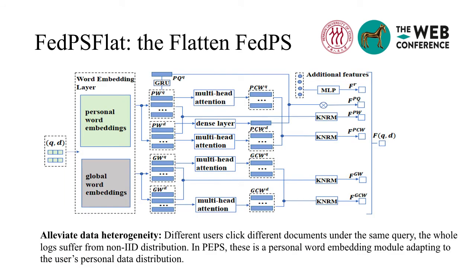During the search process, different users click different documents under the same query. Therefore, the whole logs of all users suffer from non-IID. This is one challenge for standard federated learning. We set PPS as the personalized ranking model in our framework to alleviate the problem of data heterogeneity. PPS sets up a module with personal word embeddings for each user trained from the user's own search data. This module can adapt to the user's personal data distribution, thus alleviating data heterogeneity.